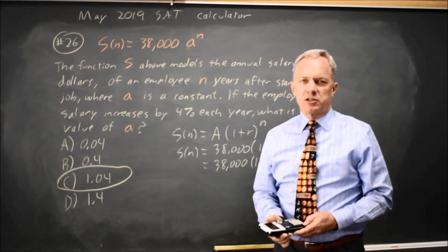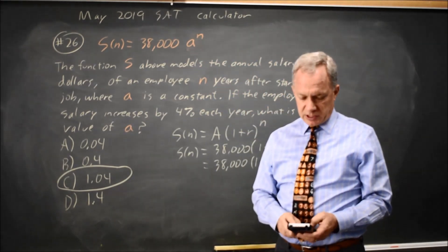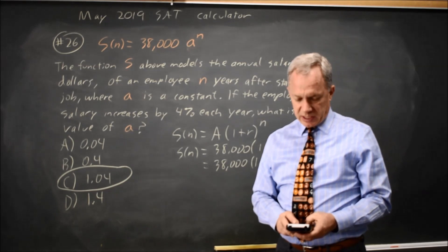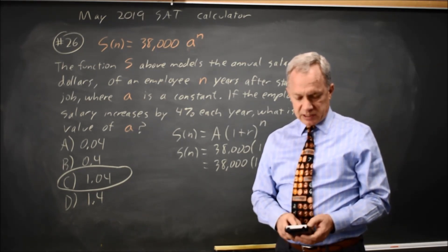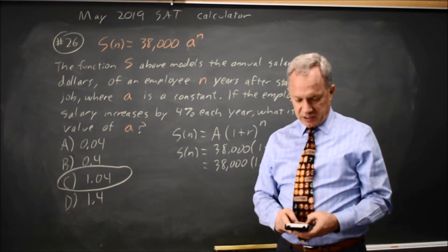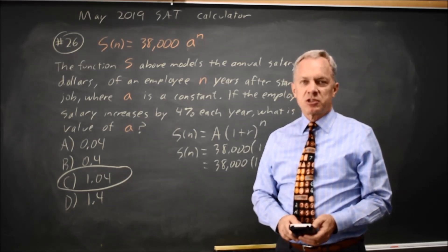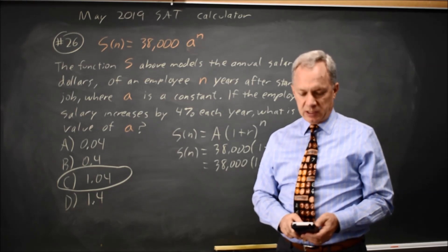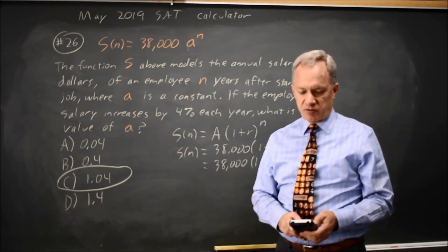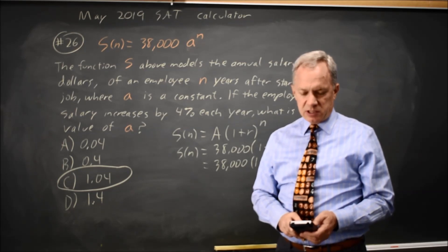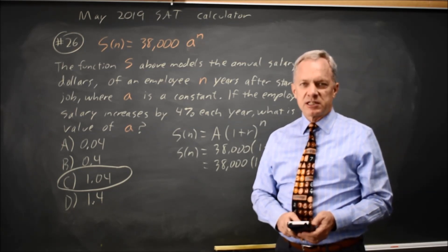If you're tempted to use 0.04 to the N, try 38,000 times 0.04 to the X in your graphing calculator and look at the table starting at X equals 0 and going up in increments of 1. After one year, your annual salary is 1,520, your second year, your annual salary is $60,